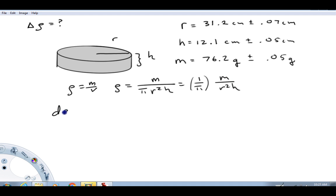So I'm going to calculate d rho, differential of rho, and I'm going to take these in this order: mass first, radius second, h third. So what we're going to have is this 1 over pi out in front of everything, and now I'm going to calculate the partial derivative with respect to m. So that's going to be 1 over r squared h times dm. So this right here is d rho dm times dm.